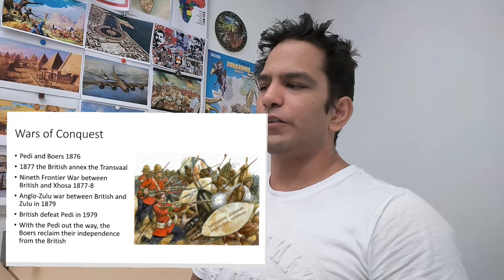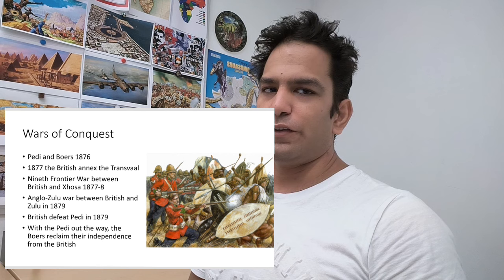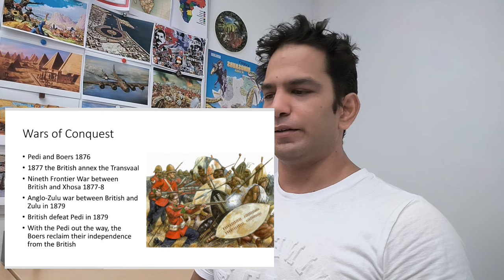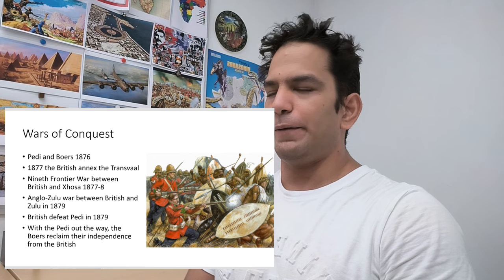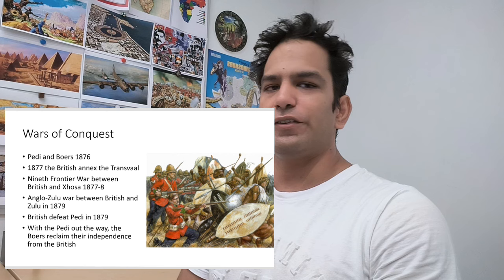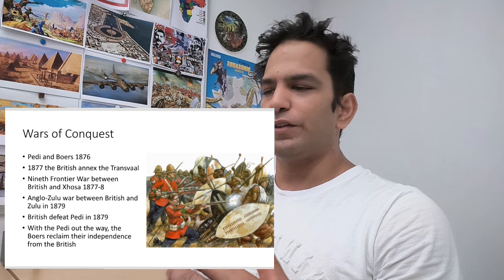The Wars of Conquest section is quite complex but can be simplified. If you look at the discovery of diamonds and then a chronology of wars in South Africa, after the discovery of diamonds the British went to war with a number of independent groups of Africans and put an end to their independence. Ultimately, between 1899 and 1902, the Second Anglo-Boer War between the British and the two Boer Republics would culminate in the formation of South Africa.